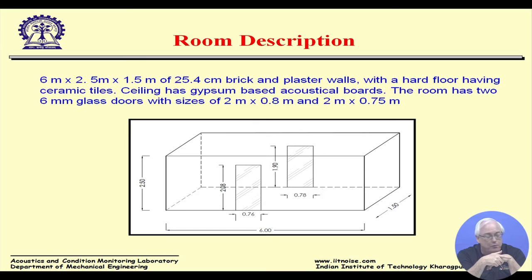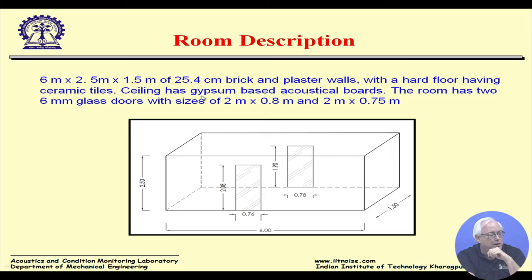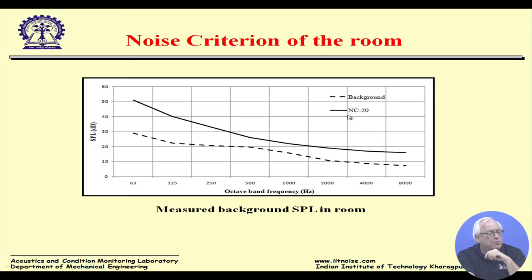There is data from a room used locally (6 m × 2.5 m × 1.5 m, with hard floor and gypsum-based acoustical ceiling boards) used as a small reverberation room for measuring jute felt absorption. This space was impressively quiet — full-octave background noise levels fall below the NC-20 curve, making it a very good space for measurements. The level difference between outside and inside is about 40 dB across much of the frequency range, with the difference increasing with frequency.